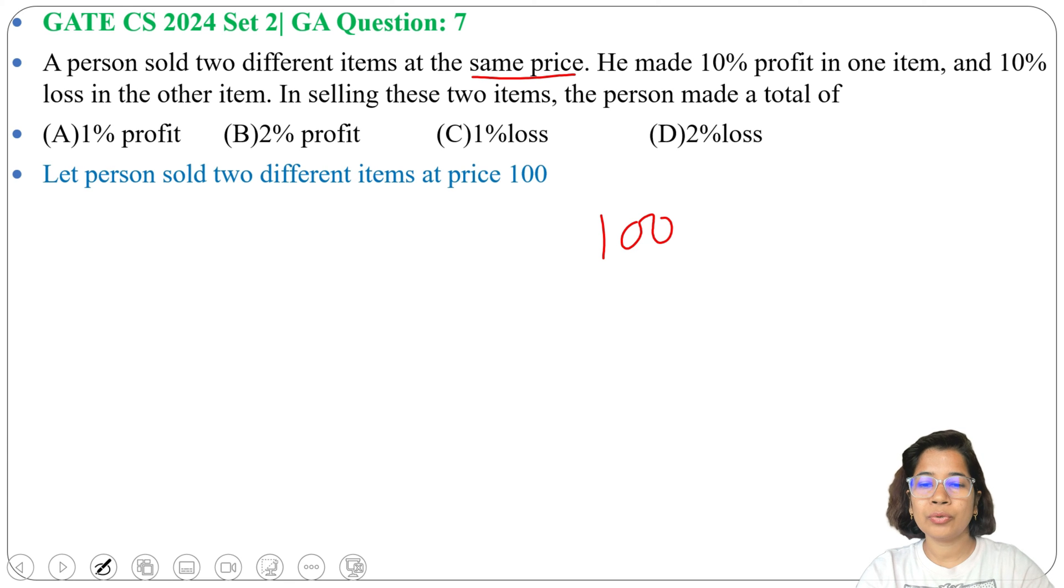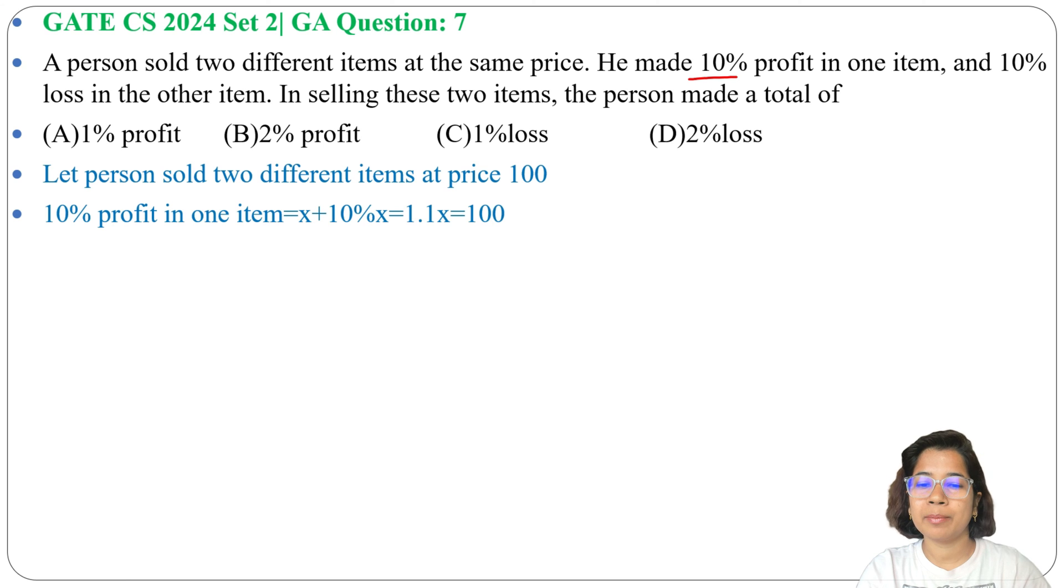The person sold two different items at price 100. The first item was sold at 10% profit, so let that item's cost price be X. He got 10% profit on X, so X plus 10% of X equals 1.1X equals 100.